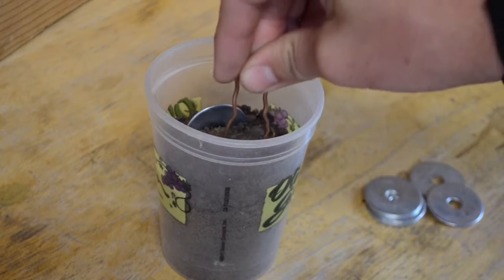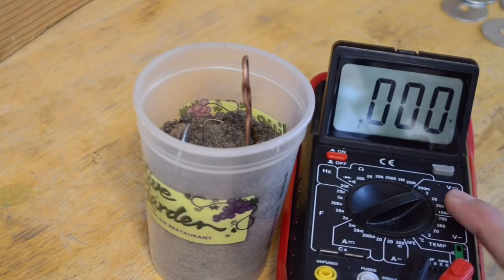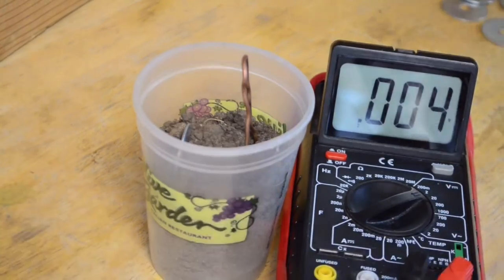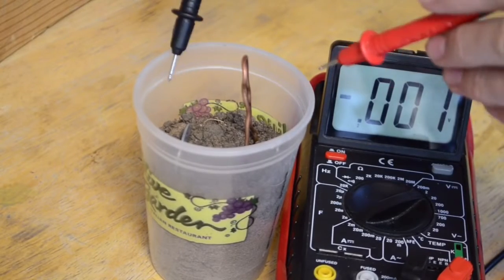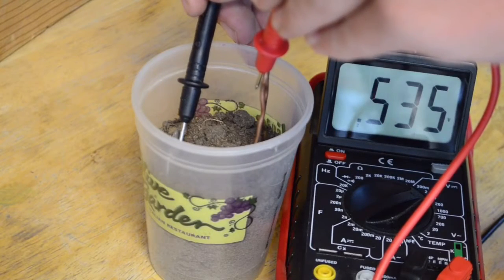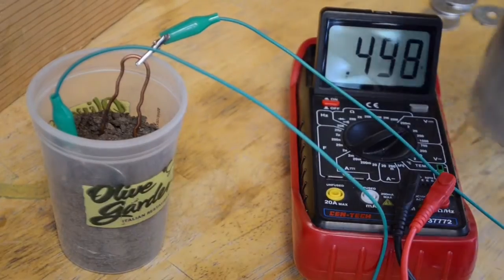Now go ahead and take a multimeter and make sure it's set to around 2 volts for the measuring. Let's go ahead and probe this and see how much voltage we're getting from this. As you can see, we're getting around 0.5 volts.